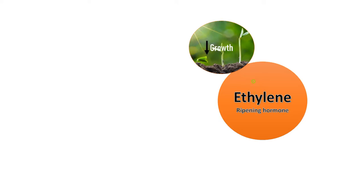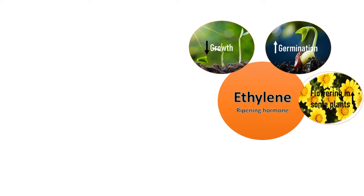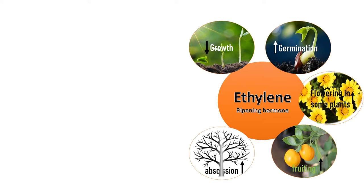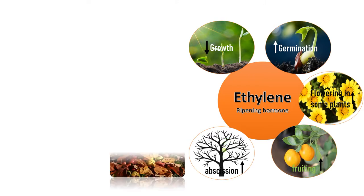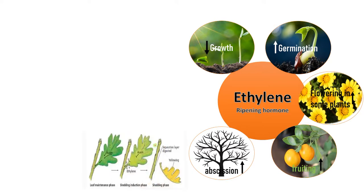Ethylene is also called the ripening hormone or senescence hormone. It inhibits growth or cell division. It favors germination, promotes flowering in some plants, and promotes fruiting. It favors abscission — the natural detachment of ripened leaves and fruits from the plant.